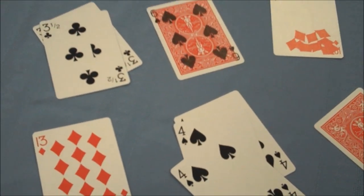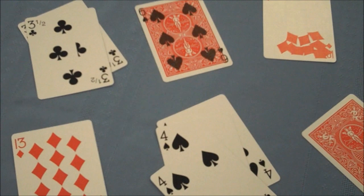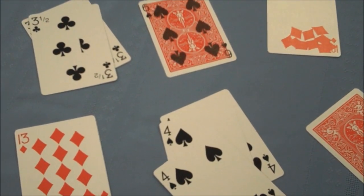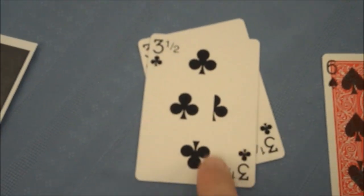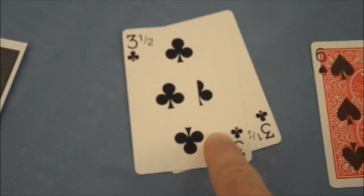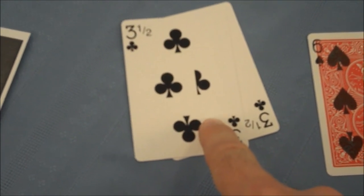I wanted to go over real quick some of the other gaff cards that are in this deck that are actually attributed to either other magicians or other magic suppliers. The very first one is this three and a half of clubs. This is actually a gaff that's sold by Murphy's Magic and I believe they're the ones that actually invented this.